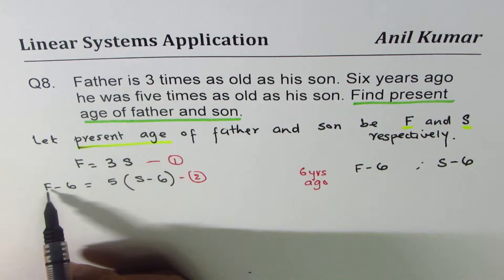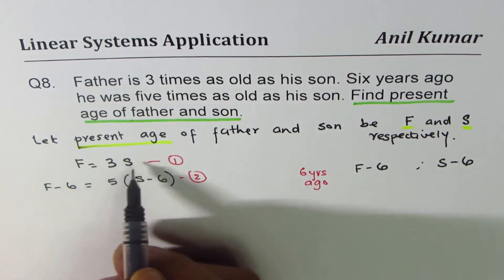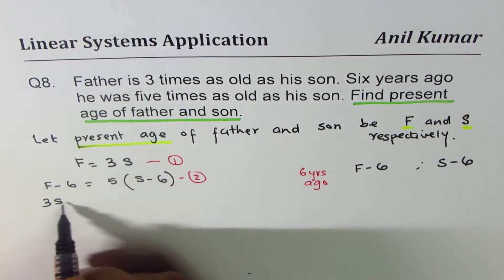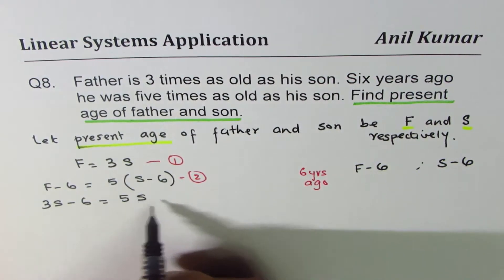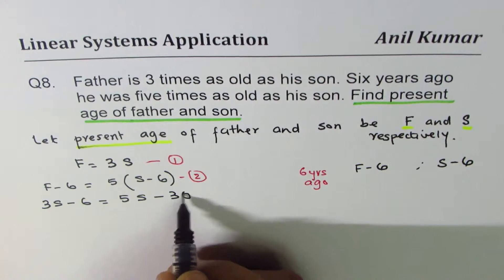F equals three S. Let's substitute here. Instead of F, I'll write three S, minus six equals to—let's open this bracket—five S minus five times six is thirty. Is it okay?